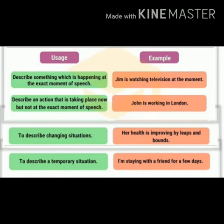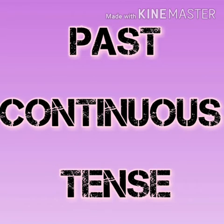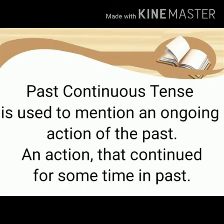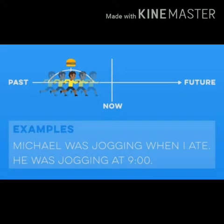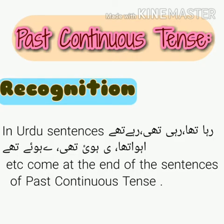Let's move towards past continuous tense. This tense is used to mention an ongoing action of the past — an action that continued for some time. It describes actions that were happening in the past and continued for some duration. Example: 'Michael was jogging when I ate' — Michael was jogging when I had my meal. Also: 'He was jogging at nine' — he was jogging at 9 o'clock.